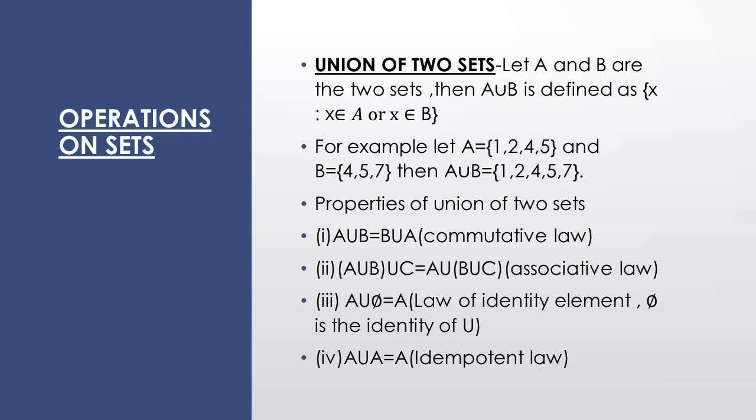हमें A union B निकालने के लिए first मैंने A set के elements लिखे: 1, 2, 4, 5. Then I go to the next set B. फिर हम next set B पे गए — now because set में elements repeat नहीं हो सकते, तो आप 4 और 5 को दुबारा नहीं लिखोगे. Then 4 and 5 are repeated, so A union B is {1, 2, 4, 5, 7}.